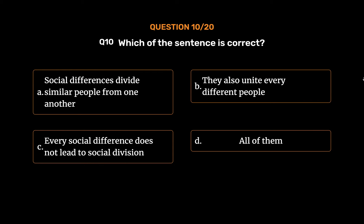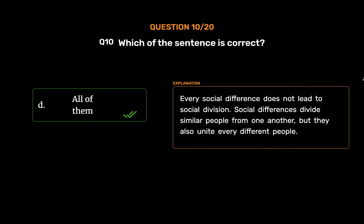The correct answer is Option D: All of them. Every social difference does not lead to social division. Social differences divide similar people from one another, but they also unite very different people.